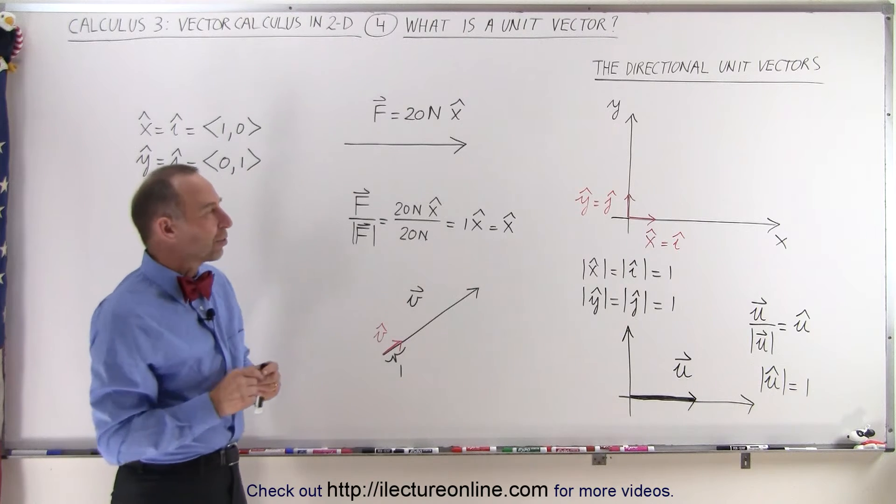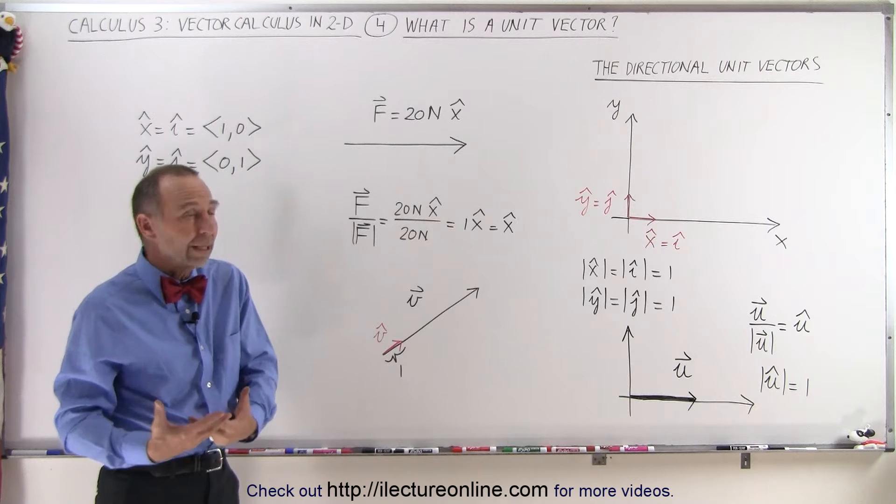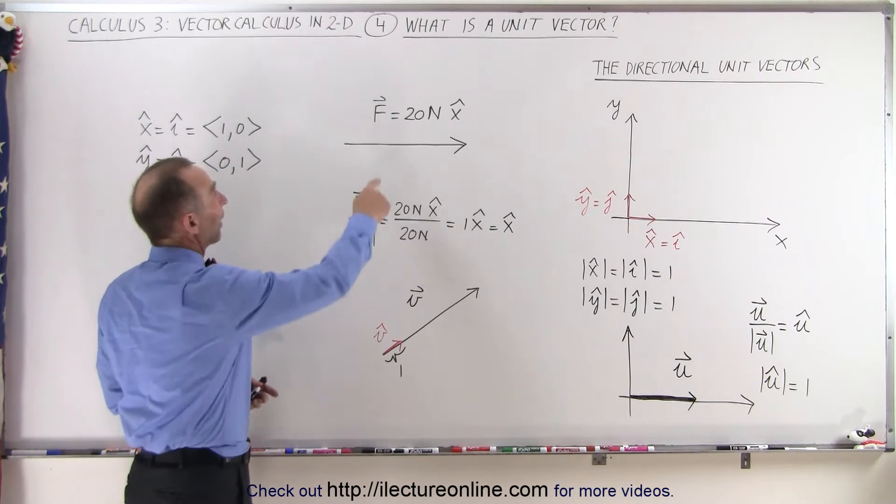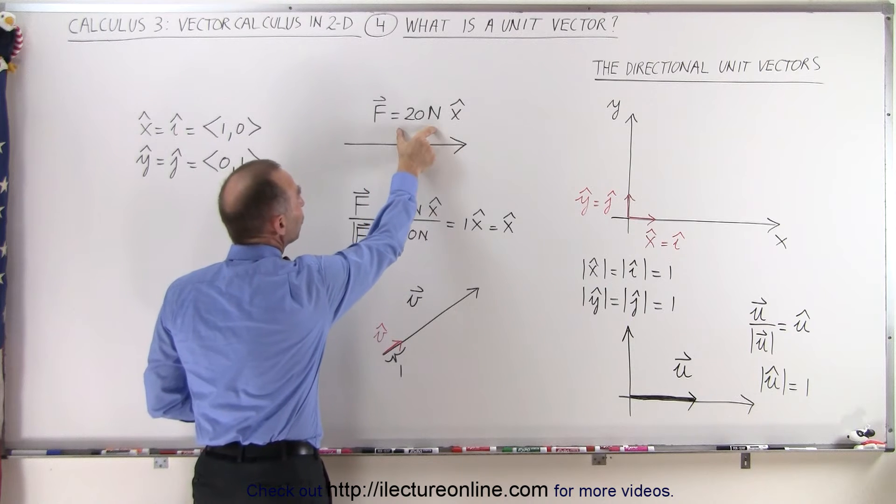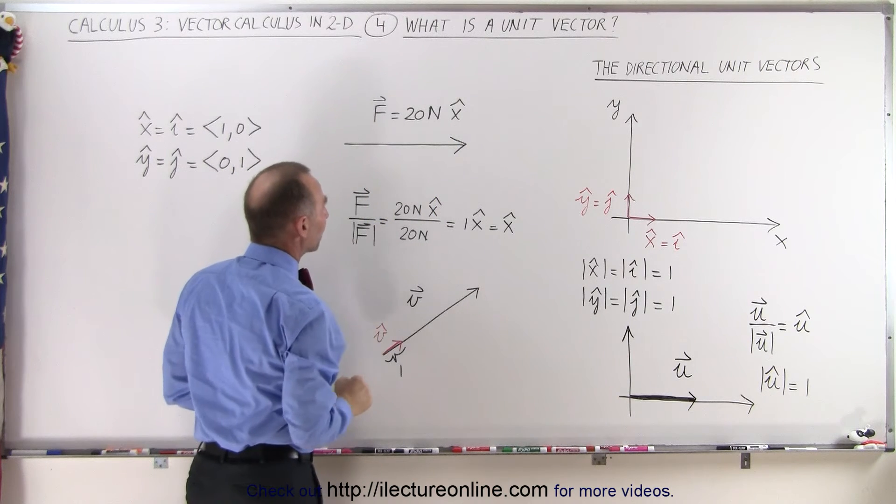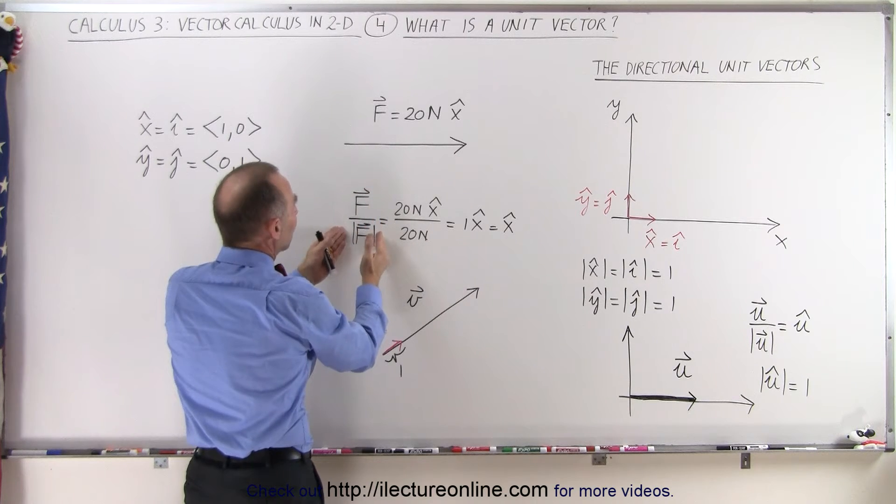And what sometimes makes it confusing is that let's say the vectors do represent like a physical quantity, like a force. Here we have a vector f representing a force of 20 newtons pointing in the x direction. So what happens now if we take that vector and we divide it by its own magnitude?